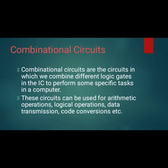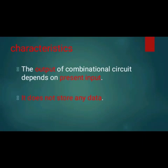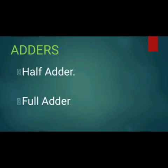Combinational circuits are circuits in which we combine different logic gates in an IC to perform some specific task in a computer. These combinational circuits can be used for arithmetic operations, logical operations, data transmission operations, code conversions, etc. Two important characteristics are: the output of a combinational circuit depends on the present input, and it does not store any data — a combinational circuit does not have a memory element.